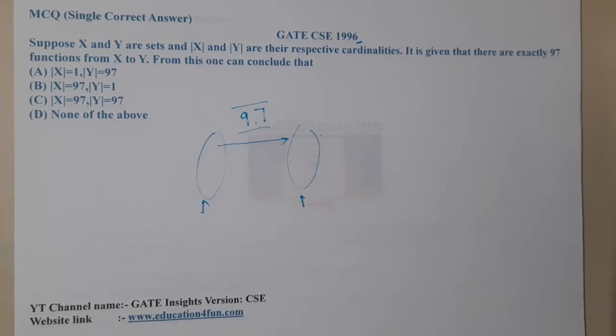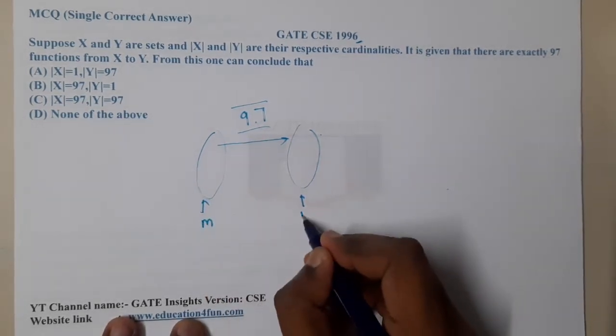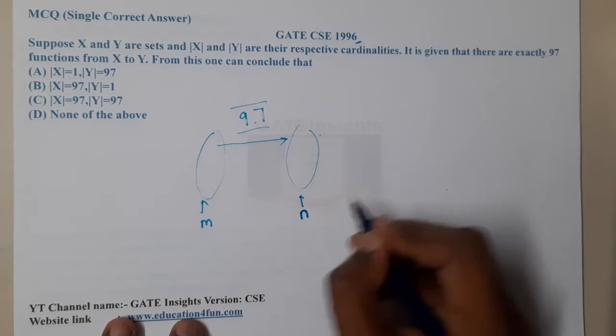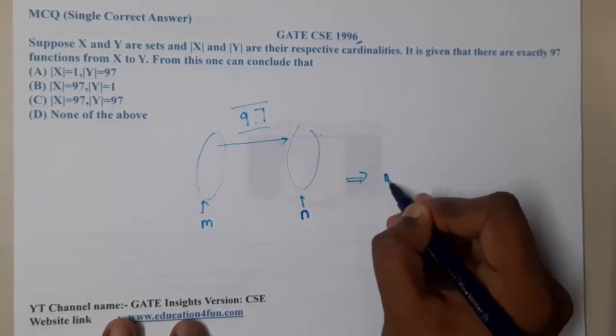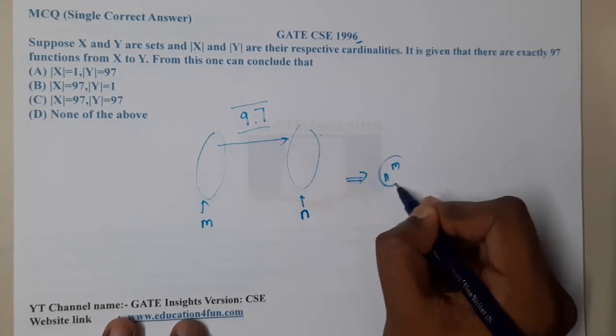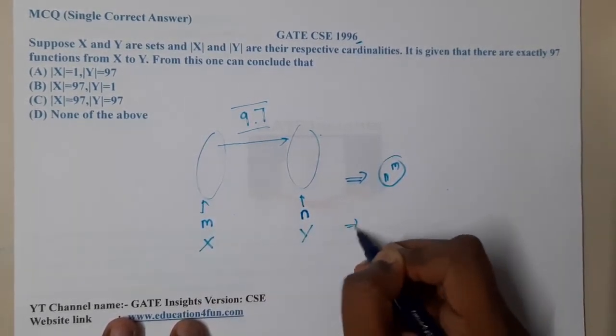If you assume these guys are m and these members are n, then the total number of functions will be n power m. By this understanding, if these guys are X and these guys are Y, the result will be Y power X.